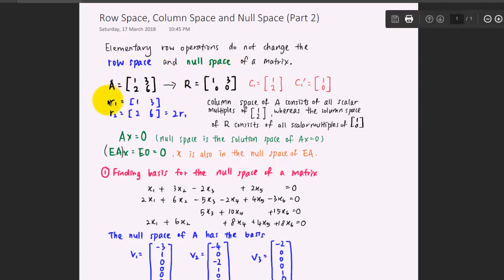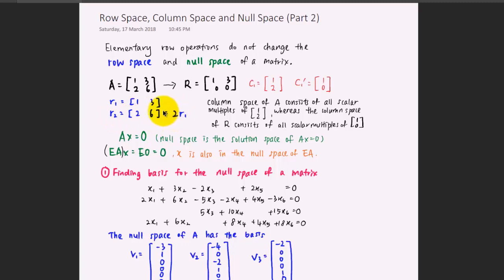To understand what this means, consider that the first row vector of A is [1, 3] and the second row is [2, 6]. By inspection, the second row is a scalar multiple of the first row with scalar 2, which means the second row is redundant. The only independent row vector for A is R1. That's why when we reduce it to row echelon form, we only have one row vector, which is similar to the original.